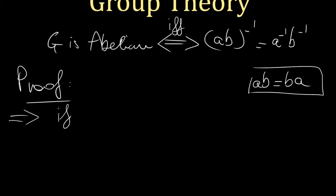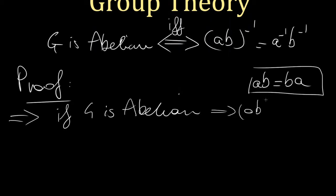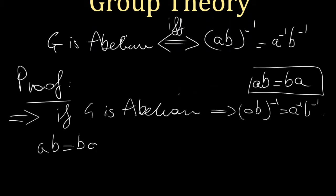We're going to prove that if G is abelian, then (AB)⁻¹ = A⁻¹B⁻¹. Our proof starts: let G be a group and let A, B be elements in G. We also assume G is abelian, so we can use AB equals BA at any time.